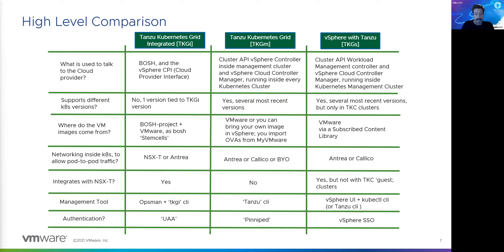VMware is in an interesting place when it comes to network support. To get Kubernetes running, you need a lot of networking around it. The big networking product VMware always had was NSX-T — yet in TKGM, there is no integration with NSX-T.